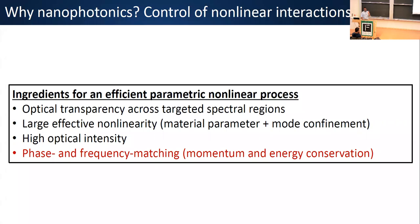Apart from device-level integration, there's a lot we're interested in taking advantage of from the nanophotonics platform. When we think about parametric nonlinear optical processes, we need materials that are optically transparent across a very broad wavelength range. We want a large effective nonlinearity associated with both the material and the modal confinement. We want access to high optical intensities — that's what lets you access the nonlinear response of the medium. And typically we have to worry about phase and frequency matching, or equivalently momentum conservation and energy conservation.